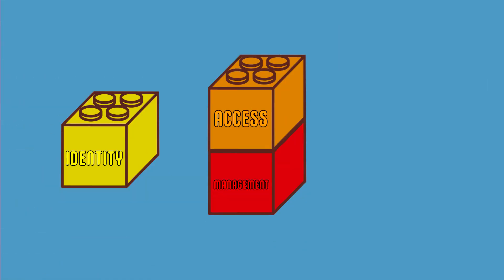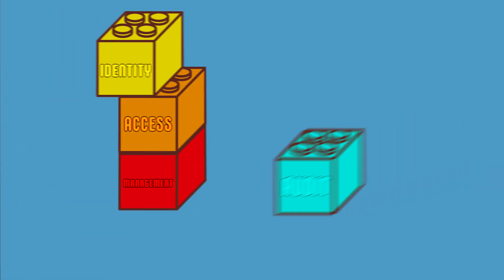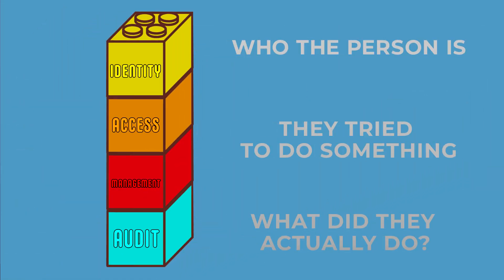And then there's actually a third piece that isn't generally talked about, which is the audit side. So you know who the person is, they try to do something — but then what do they actually do? Under what context? Was it allowed or denied? This is kind of the silent third piece of IAM. And it's the decoupling of those components into specialized services.